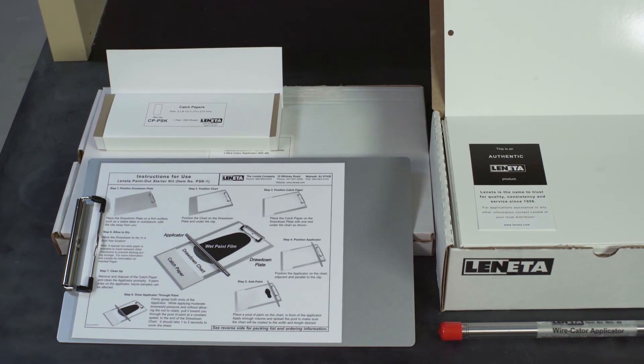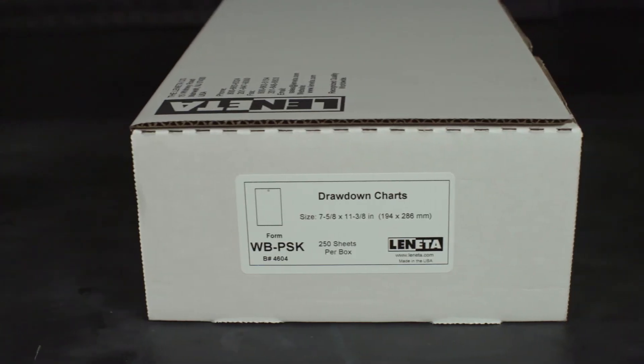It includes a Lenita DP4 aluminum drawdown plate, a box of 250 Lenita Form WB plain white charts, 7 and 5 eighths by 11 and one quarter inches.